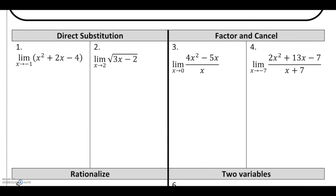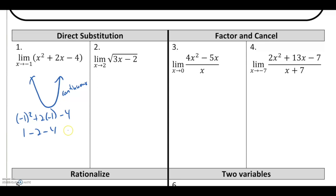Looking at the first example of direct substitution: the limit as x approaches negative 1 for x squared plus 2x minus 4. This function would be some sort of parabola — what we're going to call a continuous function in a future lesson. The limit is always going to assume the function's value. So all I have to do is plug negative 1 in everywhere I see x and get a final answer of negative 5. No matter what point I pick on a parabola, the left and right side are always going to approach the actual function's value.